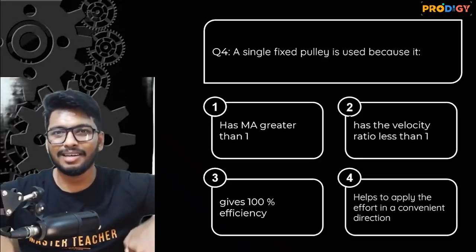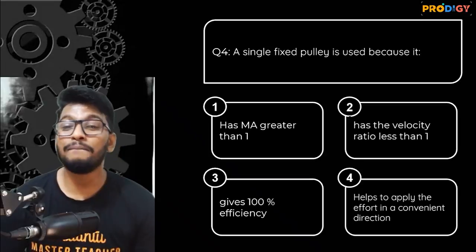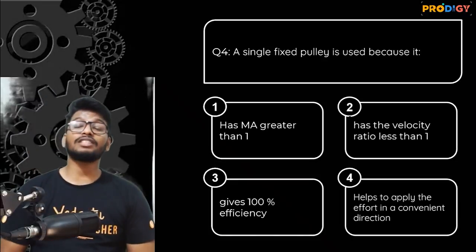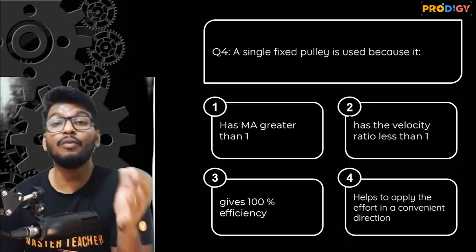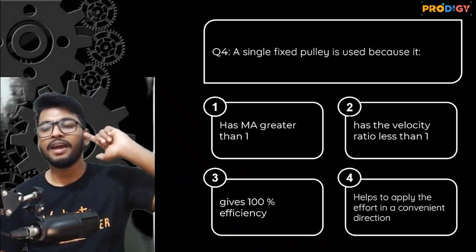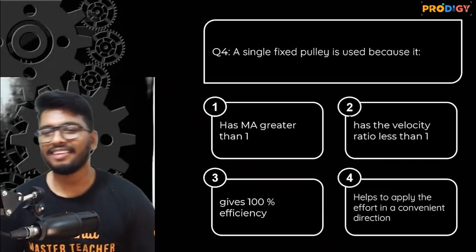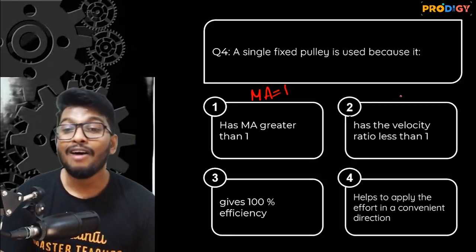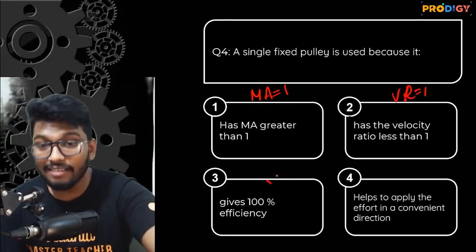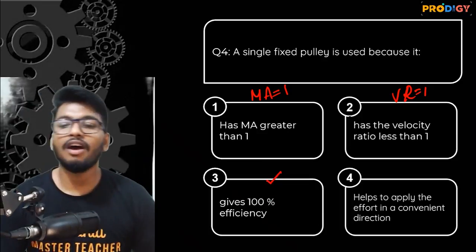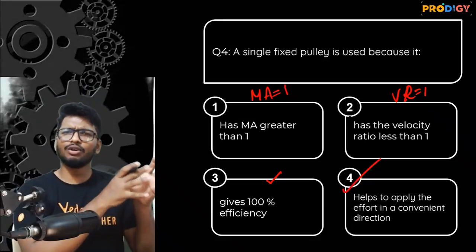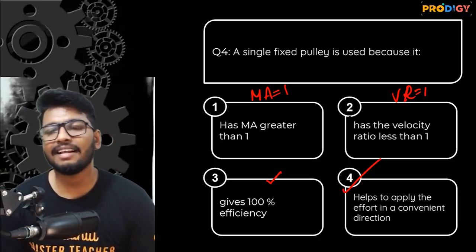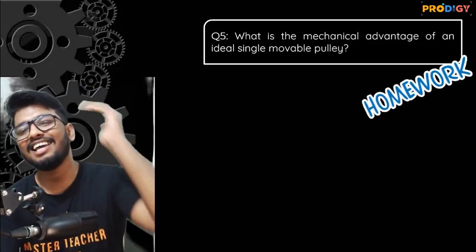Last question: 'A single fixed pulley is used because — it has MA greater than 1 / VR less than 1 / gives 100% efficiency / helps to apply effort in a convenient direction?' The answer is it helps to apply effort in a convenient direction. MA = 1, VR = 1, efficiency = 100% — but 100% efficiency also applies to a single movable pulley. We use the fixed pulley specifically because it lets us apply effort in a convenient direction.